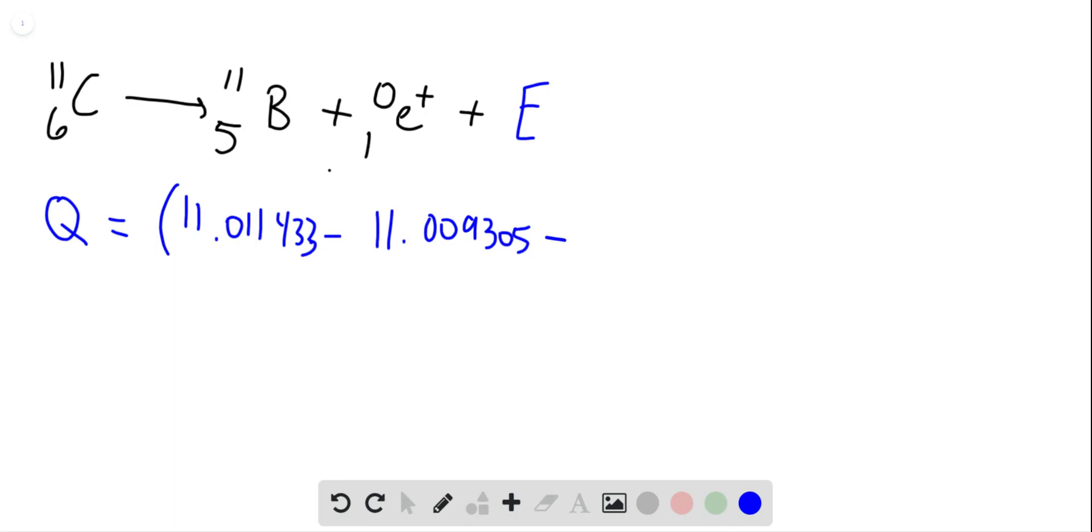There I have it, it's 5.49 times 10 to the -4 u, all of those in terms of u, times c squared because that's part of the equation for Q.